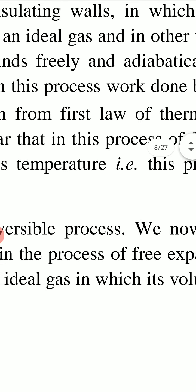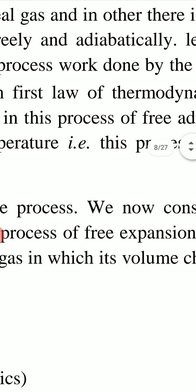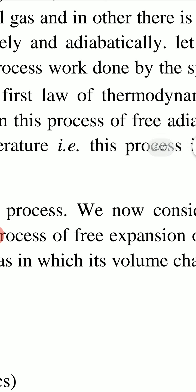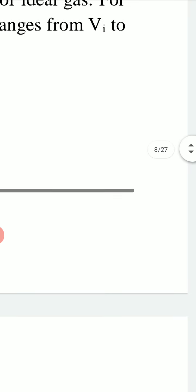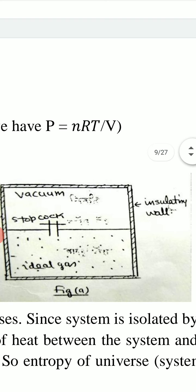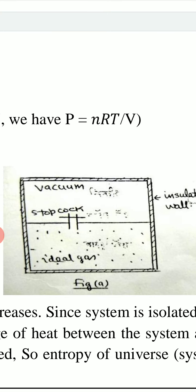When the stopcock is suddenly opened, the ideal gas expands freely and adiabatically — the gas is expanding, its volume is increasing. This process is adiabatic because the system is surrounded by insulating walls; no heat can enter or leave the system. So this process of free expansion of ideal gas is called free adiabatic expansion, and it is irreversible.